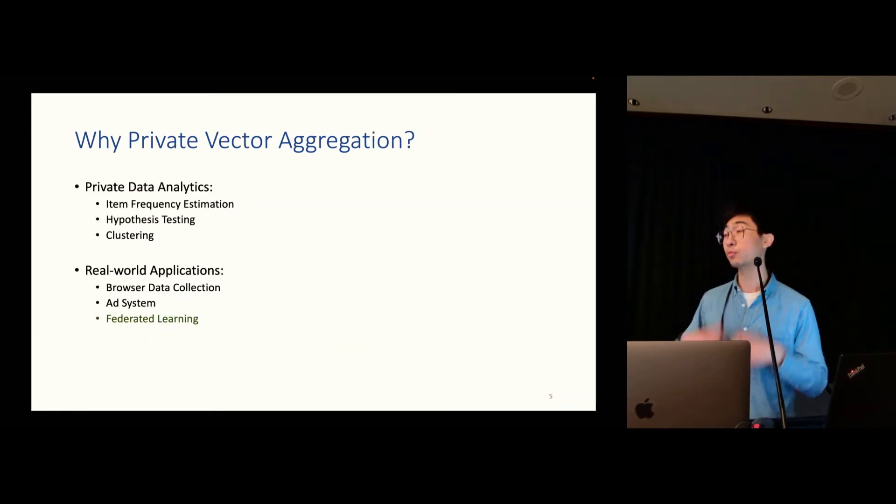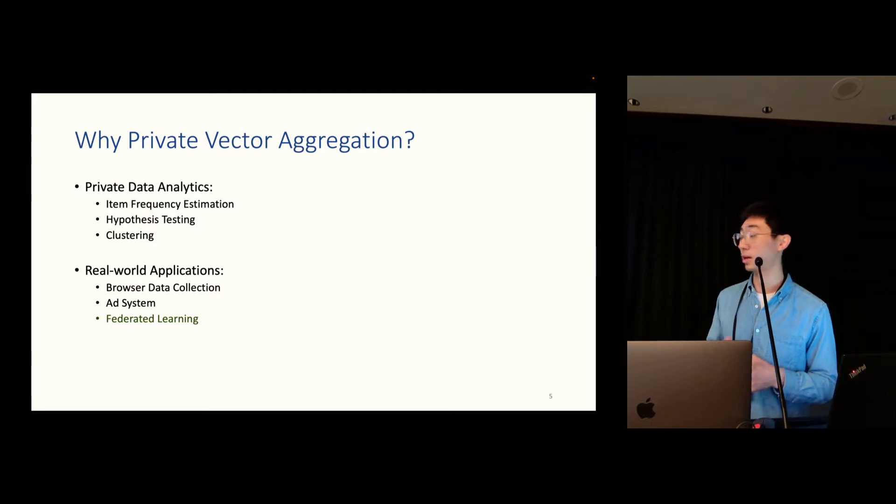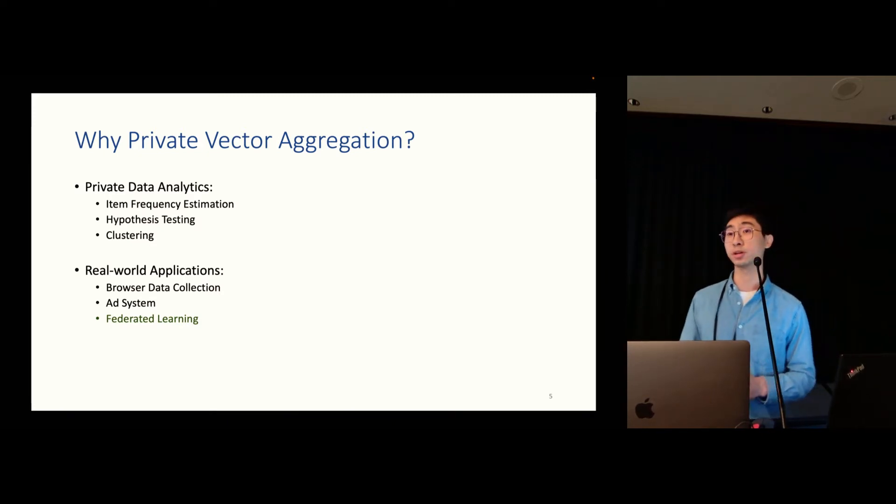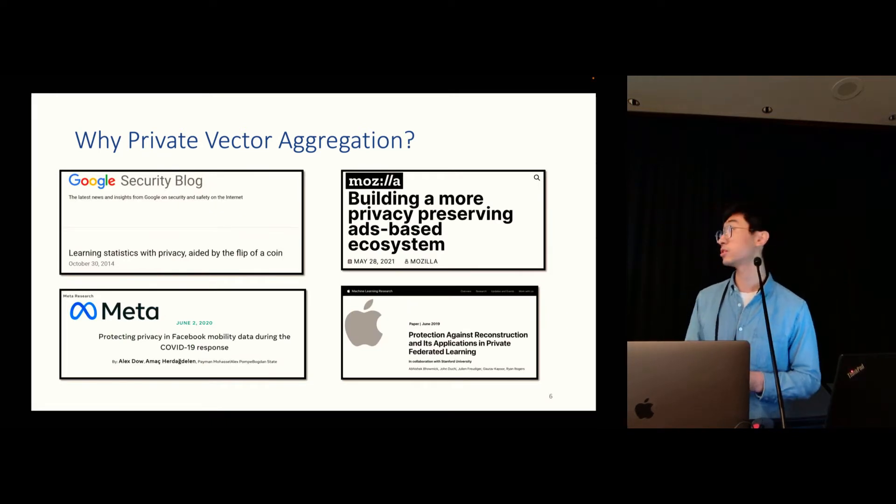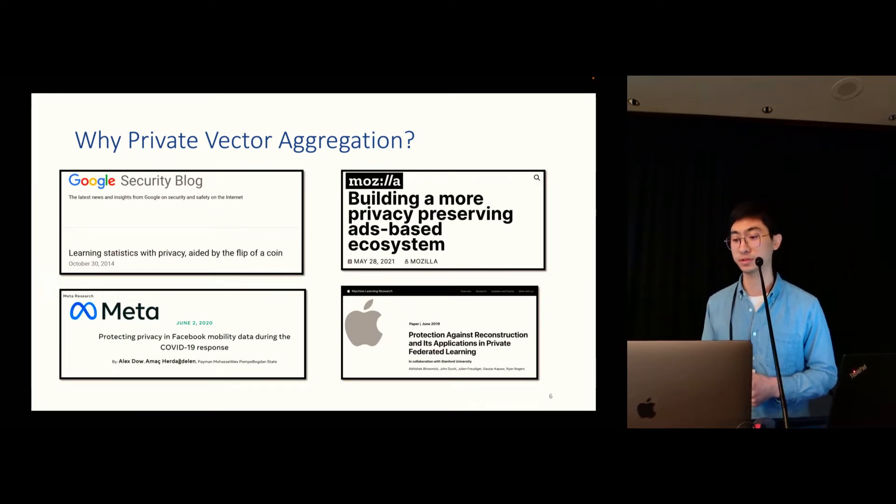To protect their own privacy, the client will use some privacy-preserving encodings to encode their local vector and upload the encodings to the server. Then the server will run some estimation algorithm on those encodings and output the estimation of the sum vector. So this is pretty straightforward. And why would we do something like this? It turns out that private vector aggregation can be very useful in private data analytics. It can be used for, for example, item frequency estimation, can be used for hypothesis testing, and even for clustering. And it also has a lot of real-world applications, for example, browser data collection, advertisement system, and federated learning. There are a lot of companies that are trying to do similar things, for example, Google, Mozilla, Meta, and Apple.